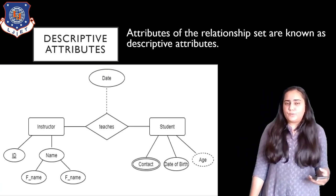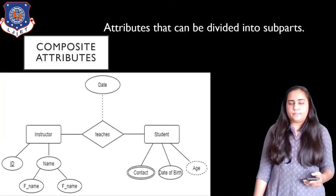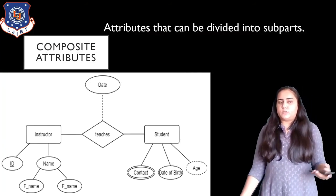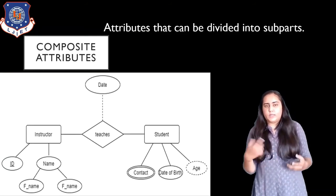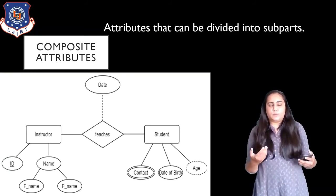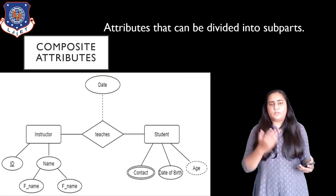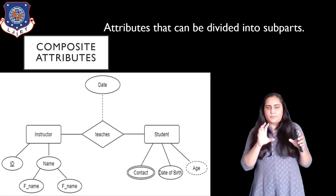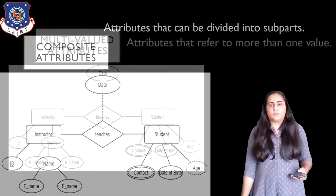The next type is a composite attribute, which can be divided into sub-parts. For example, the attribute 'name' can be divided into first name and last name. Composite attributes are shown with ellipses — one main ellipse from which multiple sub-part ellipses branch out.